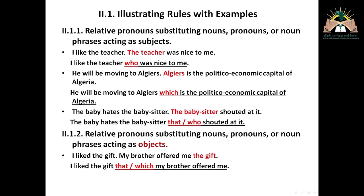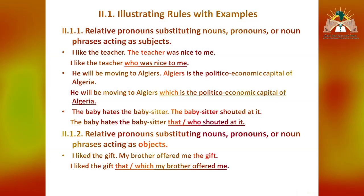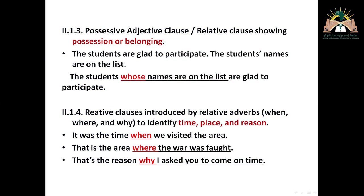Third: possessive adjective clause, or relative clause showing possession or belonging. Here we use 'whose.' 'The students are glad to participate. The students' names are on the list.' The students — not any student, not general — we've got to move to specific or particular. 'The students whose names are on the list are glad to participate.' Just those whose names are figured on the list.